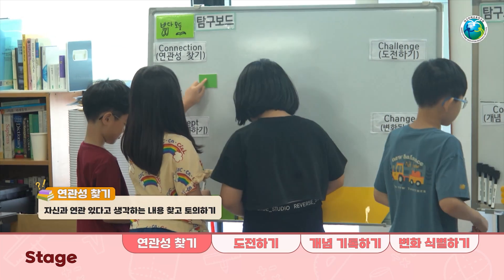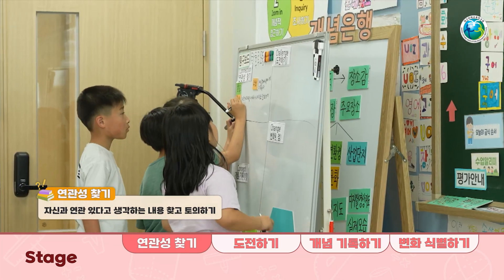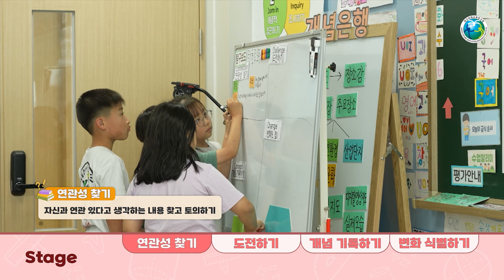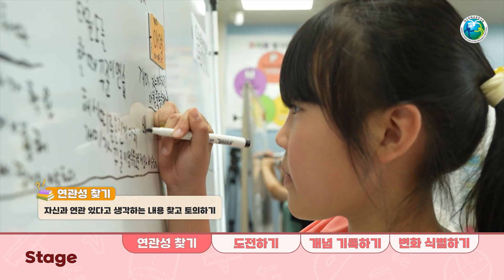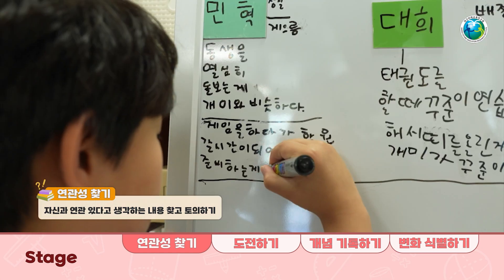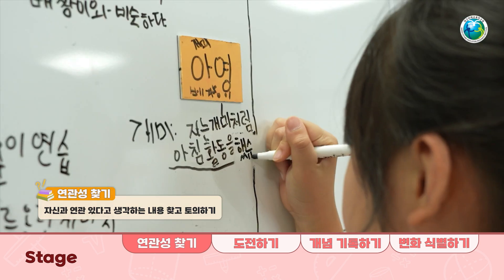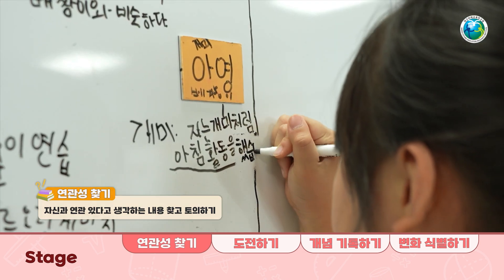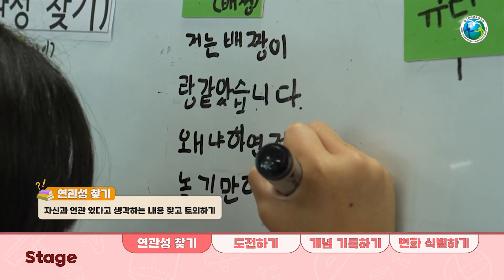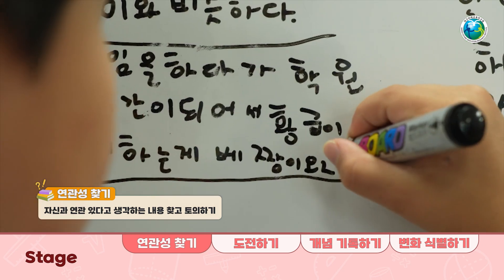연관성 찾기 단계는 주제나 텍스트에서 자신의 경험이나 알고 있는 지식과 관련 지어서 설명하는 단계입니다. 예를 들면 개미와 배짱이를 감상한 후, '저는 개미처럼 열심히 노력해서 태권도 시합을 준비했습니다.'와 같이 학생의 삶에서 관련 지어 설명하도록 합니다.